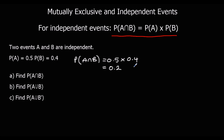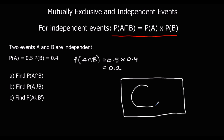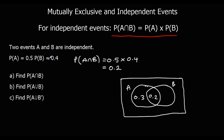So now we can draw a Venn diagram for this information. We've got A and B. Our middle bit is 0.2. The probability of A is 0.5 — we've already got 0.2, so we need another 0.3. The probability of B is 0.4 — we've already got 0.2, so we need another 0.2. And on the outside we've got 0.3 remaining.